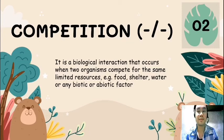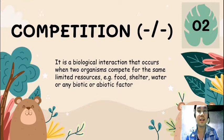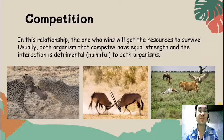The second interaction is what we call competition. In this relationship, two organisms compete for the same limited resources, like food, shelter, water, or any biotic or abiotic factor. Since both of them are being harmed because of survival, the sign we use here is both negative. The one who wins gets the resources to survive. Usually both organisms that compete have equal strength, and the interaction is detrimental or harmful to both organisms.